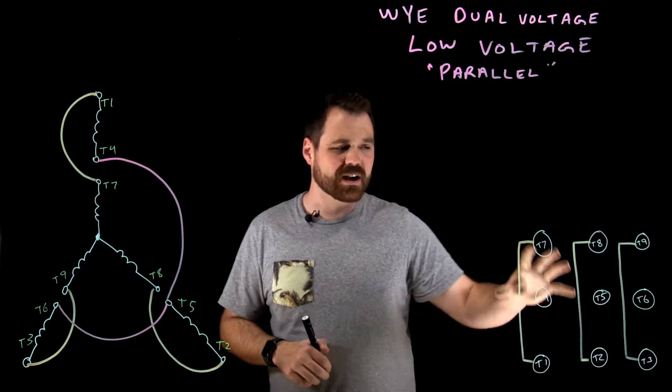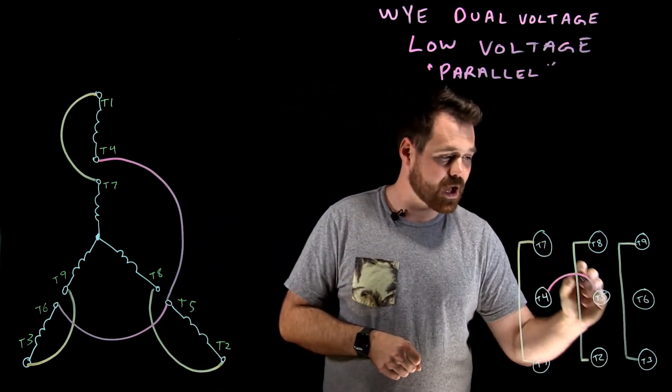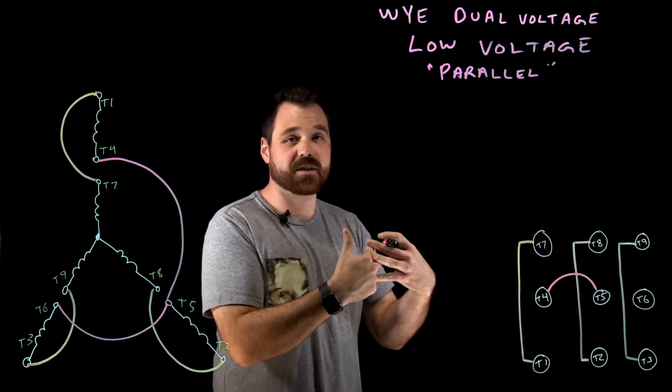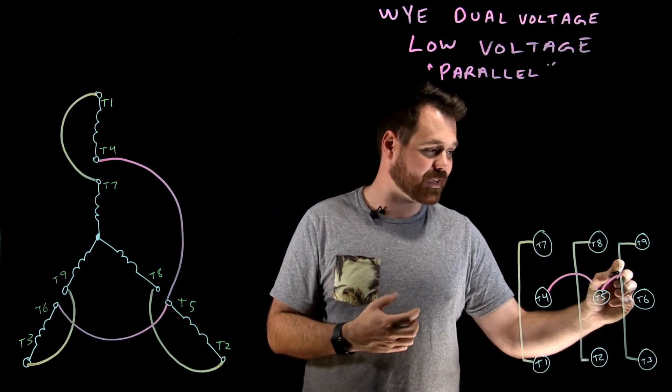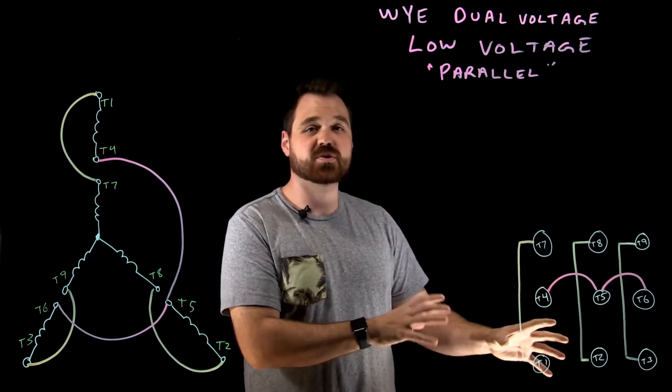And then I'm going to make that connection over here. These here are just imitating my leads hanging out of the junction box on my motor. I have nine leads hanging out of that junction box, so that's what those connections would look like.